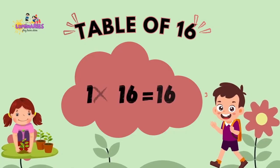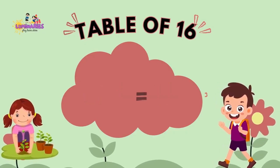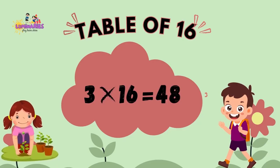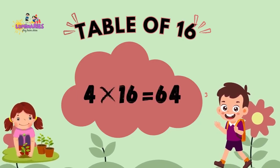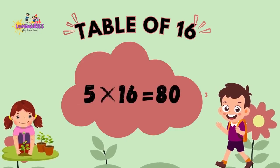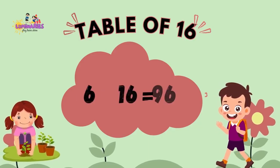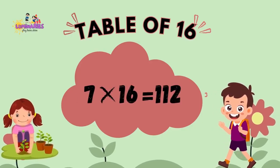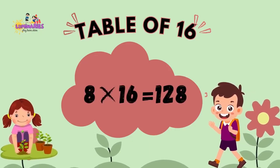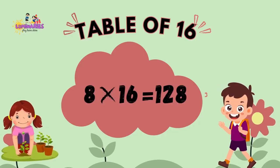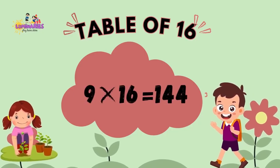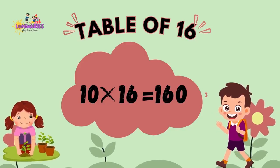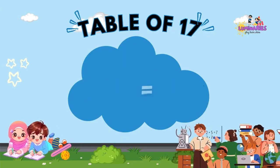Table of 16. 1 x 16 is 16. 2 x 16 is 32. 3 x 16 is 48. 4 x 16 is 64. 5 x 16 is 80. 6 x 16 is 96. 7 x 16 is 112. 8 x 16 is 128. 9 x 16 is 144. 10 x 16 is 160.